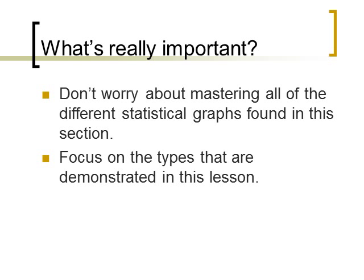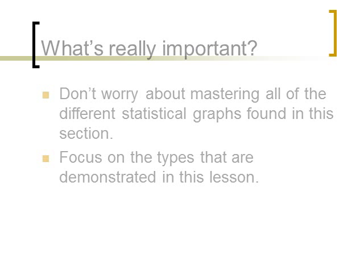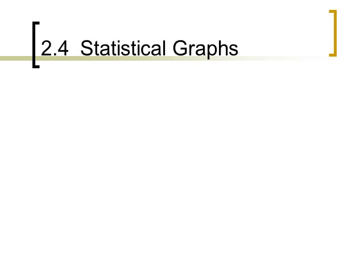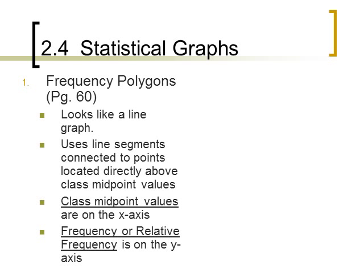What's important to know for this section is that even though there are a lot of different statistical graphs found in the section of your textbook, just focus on the types that are demonstrated. The first type of graph that's presented is on page 60 in your textbook, and it's called a frequency polygon. A frequency polygon looks like a line graph. A line graph is used to show the change that takes place over time, and you're basically connecting all of your data points in a straight line together.